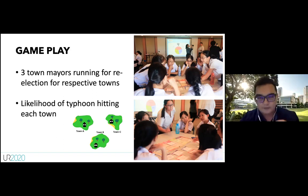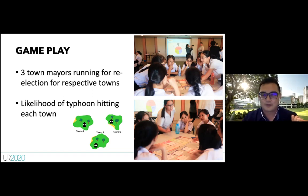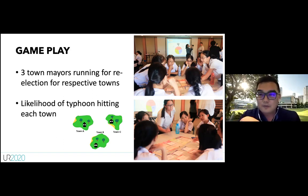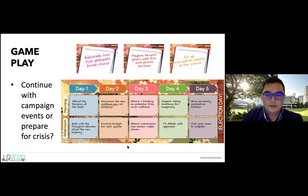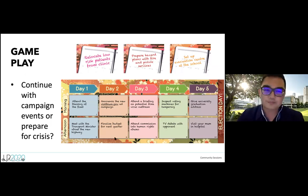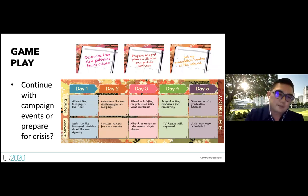The rest of the players are townsfolk who can voice opinions. The scenario involves a typhoon with a probability of hitting one of the three towns — each town has a color on the probability scale shown on screen. Each day spans a game board from day one to five, with morning and afternoon tasks for the mayor to complete.